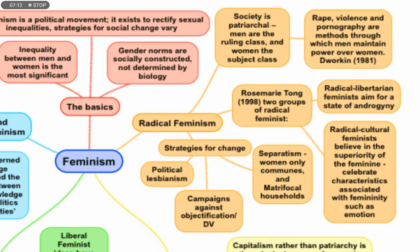Rosemary Thong, also a radical feminist, argues that there are two types of radical feminists. The first are radical libertarian feminists who aim for a state of androgyny — a condition in which men and women are equal. You can see these radical feminists depicted with women dressed as men and men dressed as women. They believe that sex should not be any constraint, and ultimately, if you let the woman be, these sex differentials will evaporate.